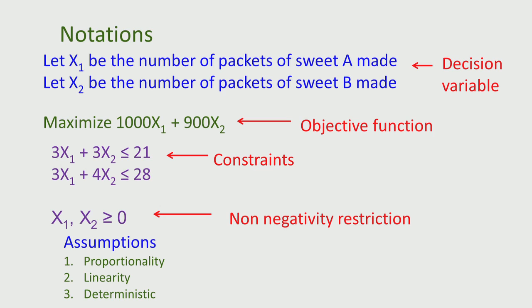Proportionality means that if I make one packet of sweet A, I get 1000 rupees by selling it. If I make X1 packets, I get 1000 times X1. If I make half a packet, I get 500; if I make two packets, I get 2000 and so on. Similarly, for every packet I need 3 kg of the resource, so for two packets I need 6 kg, and for half a packet I need 1.5 kg. This is the proportionality assumption.